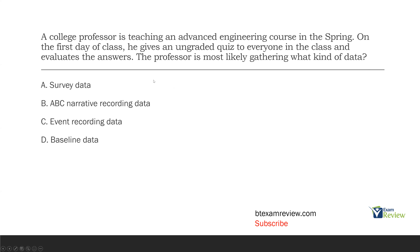Question two. A college professor is teaching an advanced engineering course in the spring. On the first day of class, he gives an ungraded quiz to everyone and evaluates the answers. The professor is most likely gathering what kind of data? This is a little bit of a tricky question. It's very applied, but you have to think. The question wants to know what kind of data the professor is gathering, because the professor is obviously using this ungraded quiz for a reason.